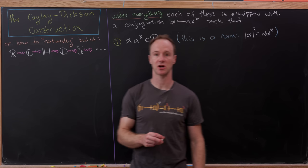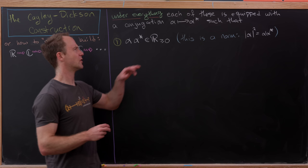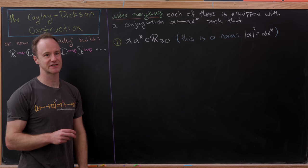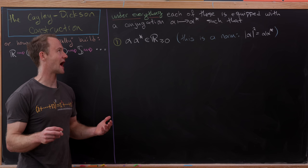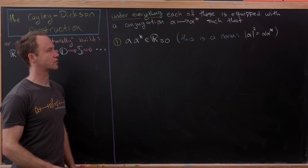What I really want to do today is look at the details of this construction. In order to do that, I'd like to say that underlying everything, each of these algebras is equipped with something called a conjugation. I'll denote that by: the conjugate of alpha is alpha-star, and it's going to satisfy some rules. The fact that all of these algebras have this conjugation is really what allows us to build the construction device between all of them.